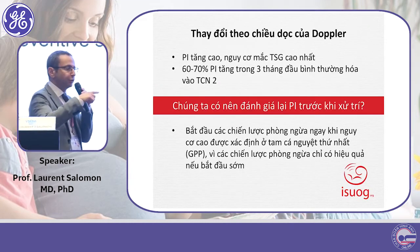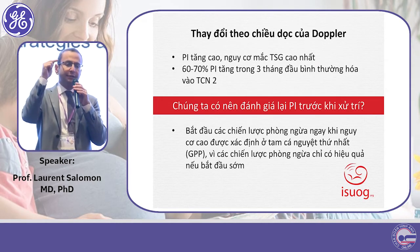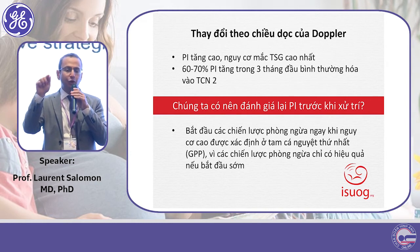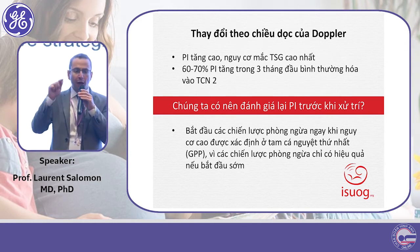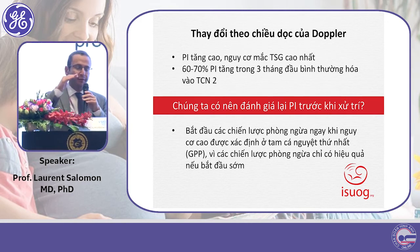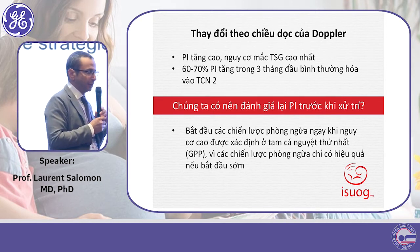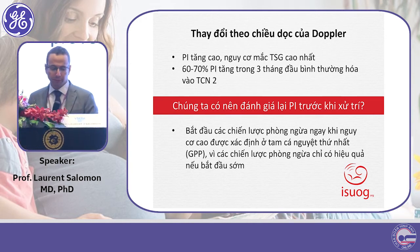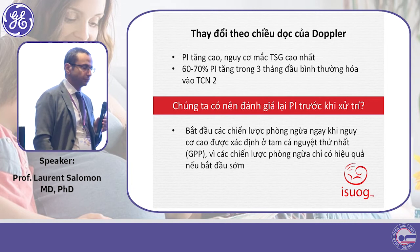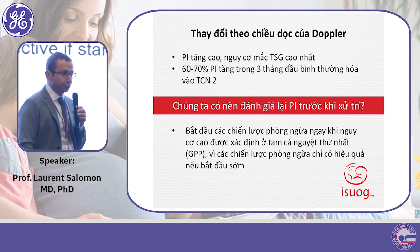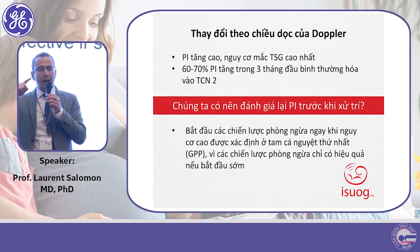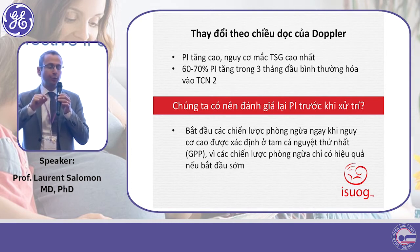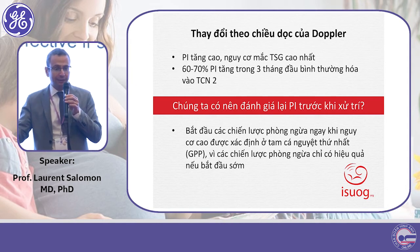Regarding longitudinal changes: women with a uterine artery Doppler that remains abnormal in the second trimester are probably at higher risk than those whose uterine artery Doppler normalizes in the mid trimester. However, we do not recommend looking at longitudinal changes, because if you wait until the second trimester to identify the highest-risk women, it is probably too late to start prevention.